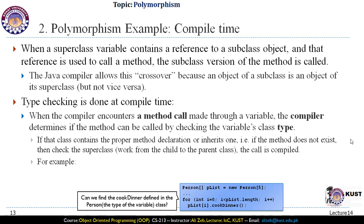If the method exists in the subclass it executes normally. If it does not exist in the subclass, the compiler checks the superclass. Because a subclass object is also a superclass object, this compiles successfully. When we create an array of superclass variables, we can assign subclass objects to that array only because those objects belong to the superclass as well.